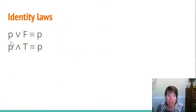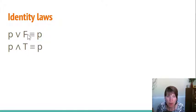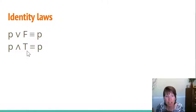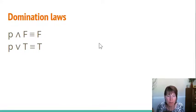The identity laws say that if you OR anything with false, you just get itself back. And if you AND it with true, you get itself back. That reflects how OR and AND work: if you OR a true with something, you get true; OR with false, you get false — so you get itself. When you AND with true, again you get yourself: true AND true is true, false AND true is false. So you come out the same.